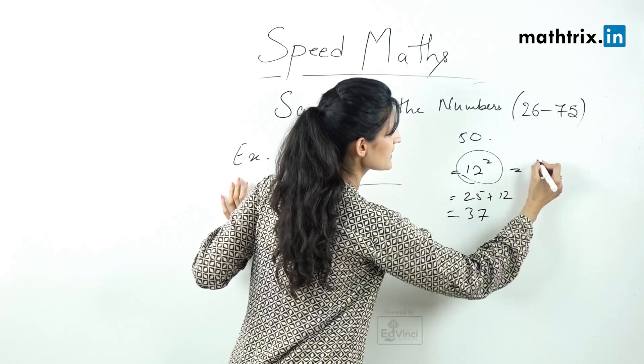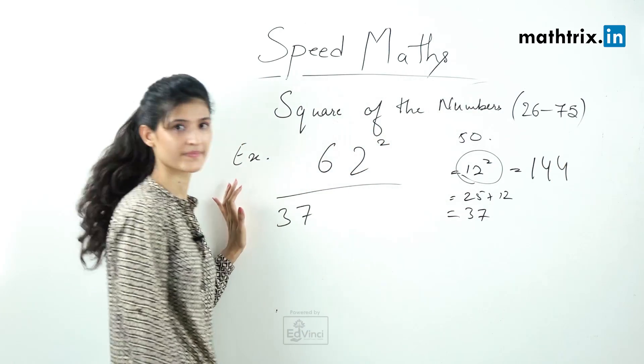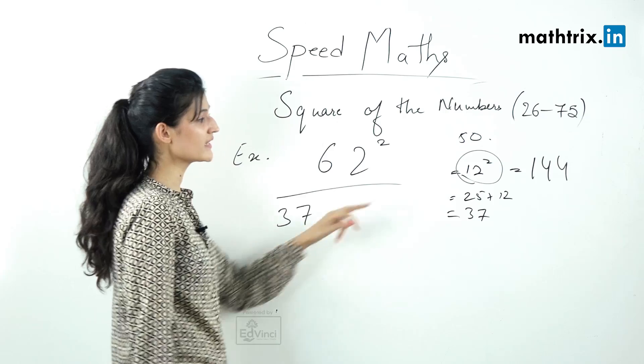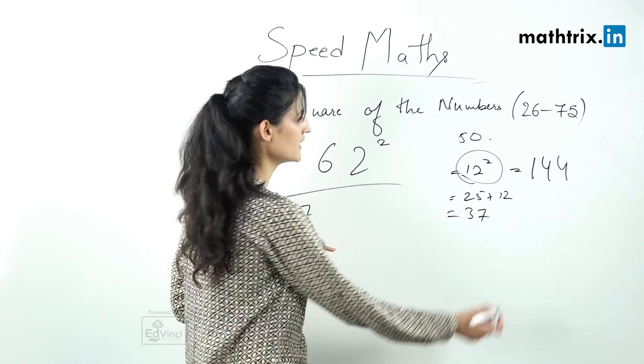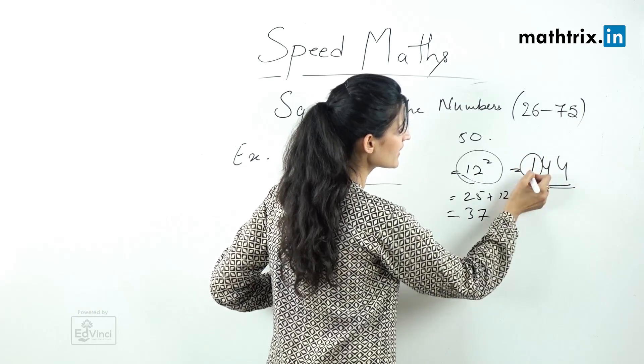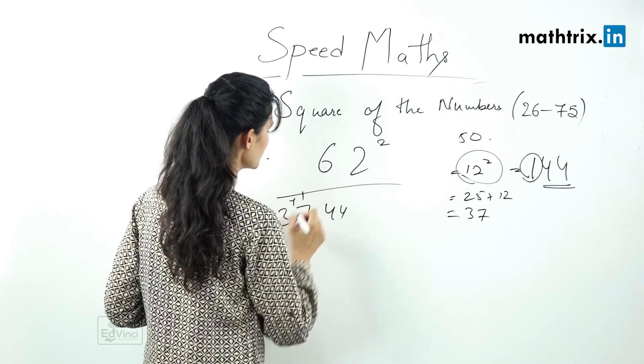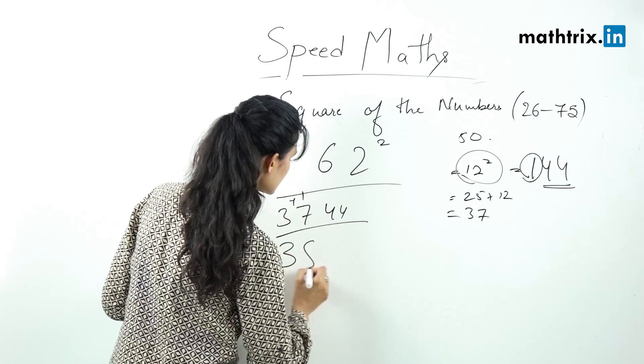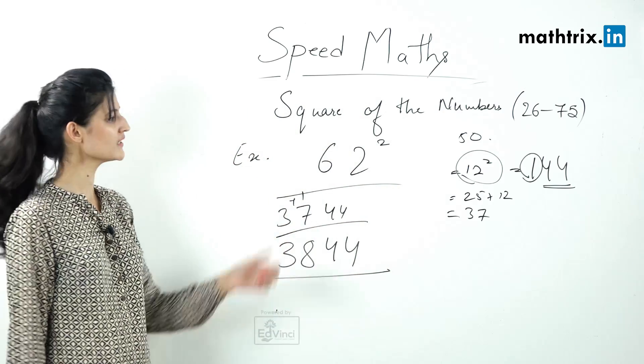Step number four, square the difference. So when we square the difference we will get 144. But as we know that this square should always give us last two digits of the answer, so we will write 44 and 1 we should carry. So we will write 44 here and carry 1. So the answer is 3844. That's our answer for 62 square.